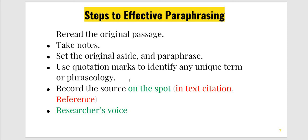If there is some definition or key term, you can keep it as it is. Otherwise, you should change the text. Record the source on the spot — in-text citation and reference. Because if you say you want to write the citation and reference afterwards, you cannot find them. So when you read and paraphrase, give in-text citation and reference at the same time.